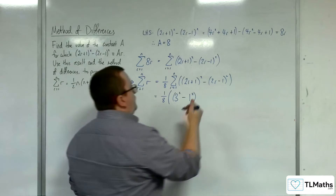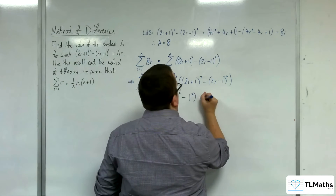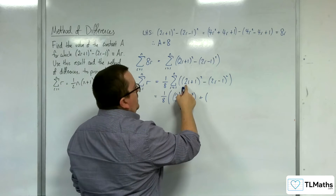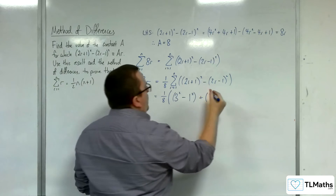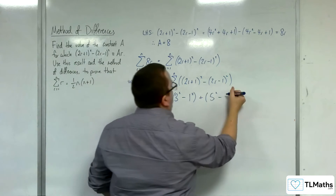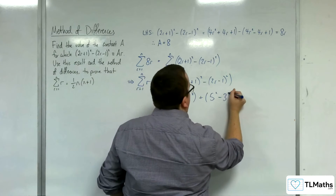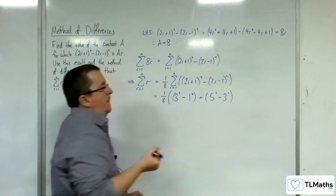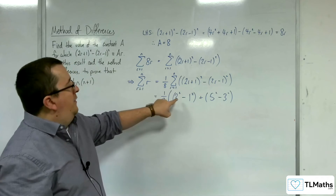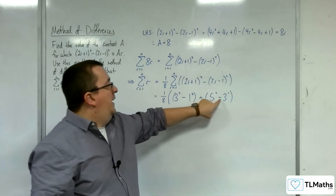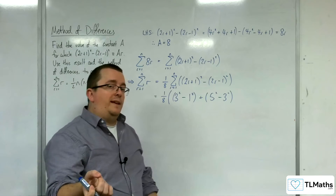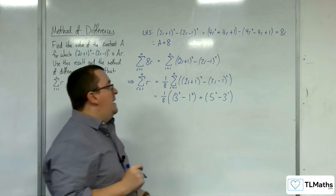Now I'm going to substitute in r=2. So substituting in 2, we're going to get 5² take away 3². Already what we have is we've got a 3² take away 3², so we know those two terms are going to cancel. Keep that in mind.